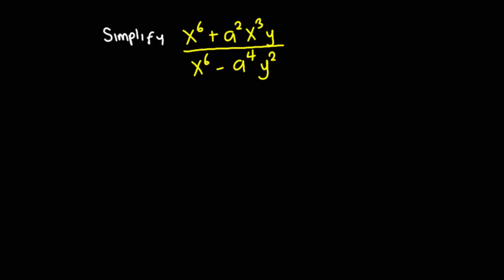So to do that, let me recall. x exponent 6 plus a squared x cubed y all divided by x exponent 6 minus a exponent 4 y squared.